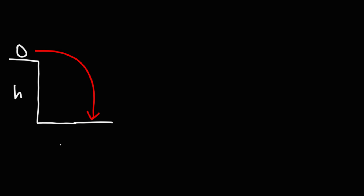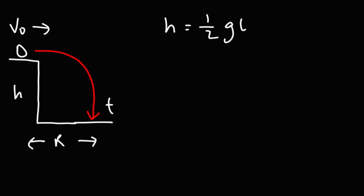Now let's go over some projectile motion formulas. The first common trajectory is a ball rolling off a cliff and hitting the ground. Sometimes you need to calculate the height of the building; other times you need the range or the initial speed, or the time it takes to hit the ground. The height of the building is one-half g·t². So if you know the height, you can find the time to hit the ground, and vice versa.